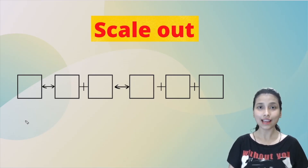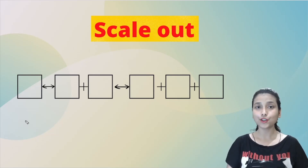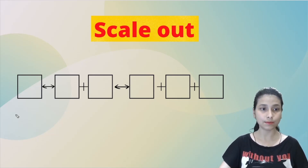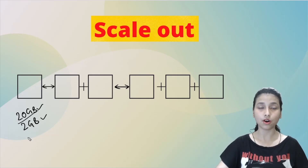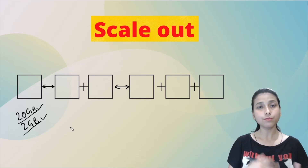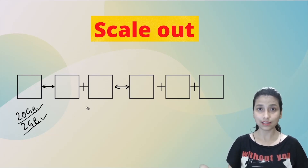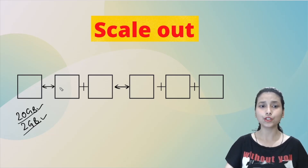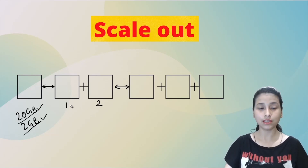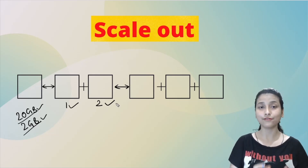Now let's discuss the scale out approach using the same example. Today I have a requirement of a system with 20 GB of hard disk and 2 GB of RAM, so I configure a system with that specification. Tomorrow, when my requirement changes, in the scale out approach I will not change my system or transfer all the data. Instead, I will add another system alongside the first one.